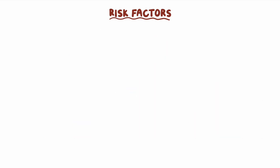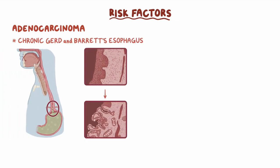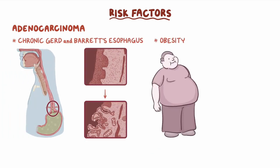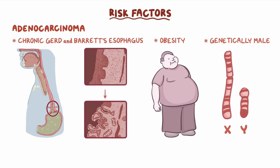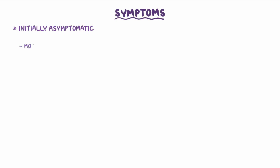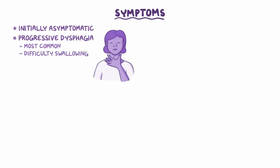The strongest risk factor for adenocarcinoma is chronic GERD and Barrett's esophagus. Obesity and being a genetically male individual also increase the risk of adenocarcinoma. Initially, esophageal cancer is asymptomatic, but once it progresses, the most common symptom is progressive dysphagia, meaning difficulty swallowing. At first, dysphagia is specific to solid foods, but as the disease progresses, liquids are also hard to swallow.